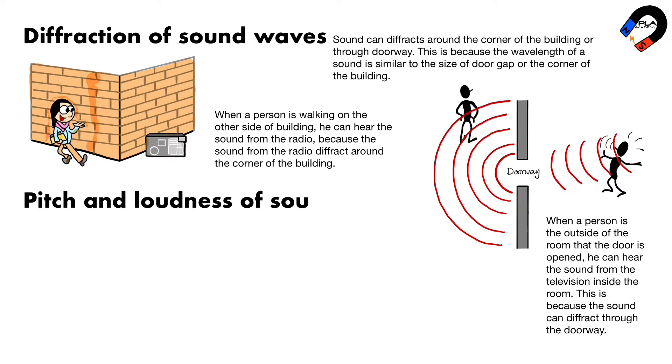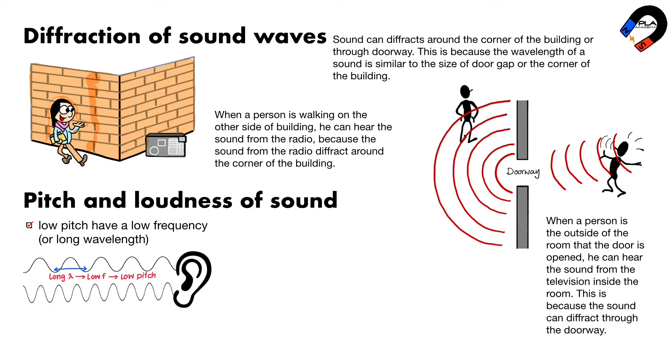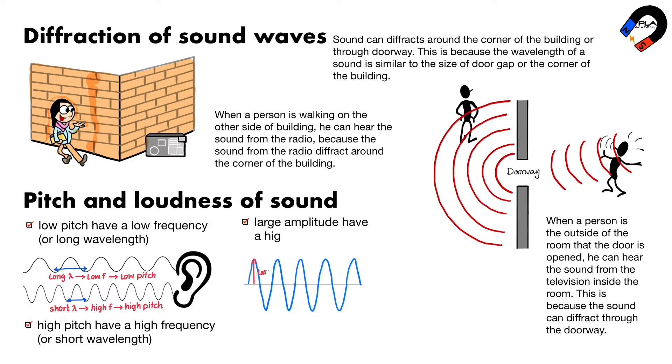Pitch and loudness of sound. The frequency of a sound wave is related to its pitch. Sounds with a low pitch have a low frequency or long wavelength. Sounds with a high pitch have a high frequency or short wavelength. The amplitude of a sound wave is related to its volume. Sounds with a large amplitude have a high volume. Sounds with a small amplitude have a low volume.